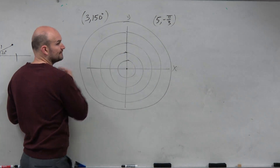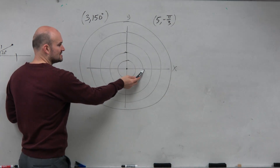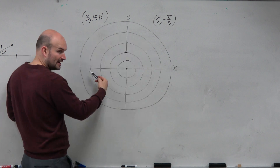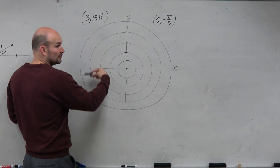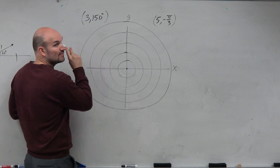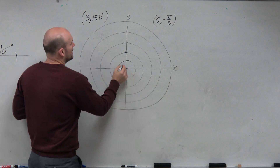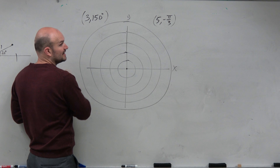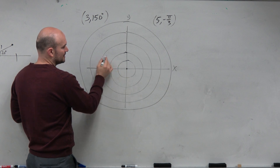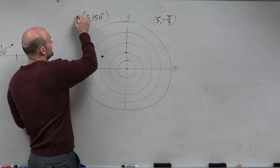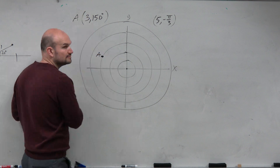So 150 degrees — obviously we recognize that is going to be in the second quadrant, because halfway around the circle is 180. That's 30 degrees away from the x-axis, so the reference angle is 30 degrees. And then we're going to be a distance of 3, so 1, 2, 3. So we probably have something right around there — let's call that A.